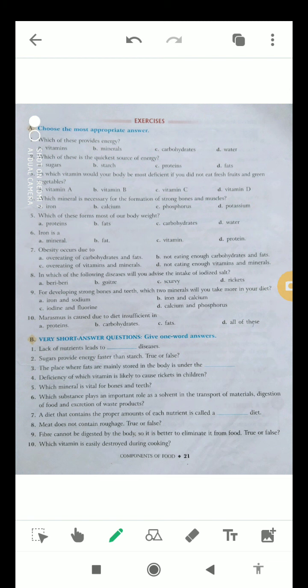Question number ten, marasmus, that is a disease, is caused due to diet insufficient in options: proteins, carbohydrates, fats, and all of these. So the correct option is D, all of these.